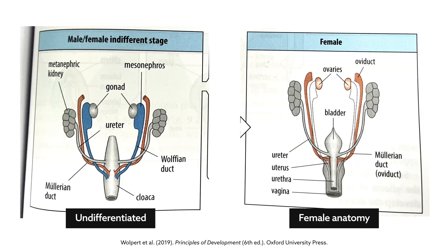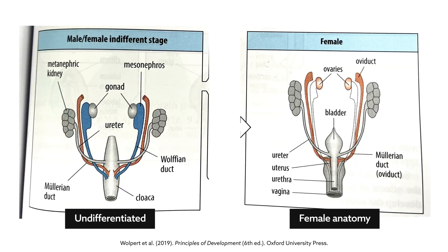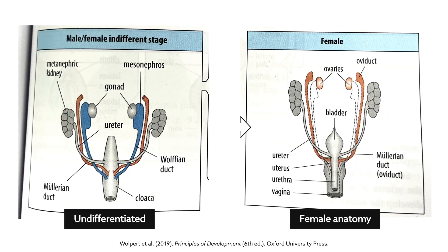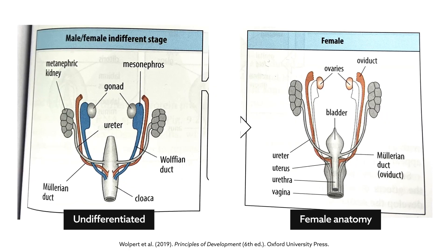But those early structures are not female anatomy — they're undifferentiated. Female development is not undifferentiated, nor is it the absence of male. It is a specialized pathway, guided by genetics, just like male development.